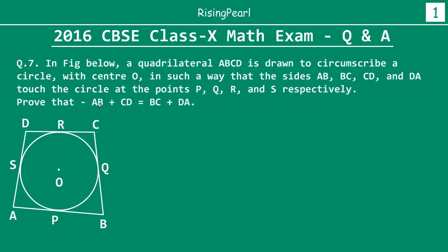We have to prove that AB plus CD is equal to AD plus BC — that is, the sum of the opposite sides are equal.